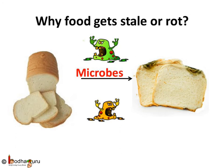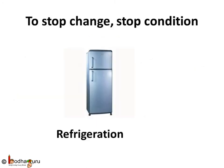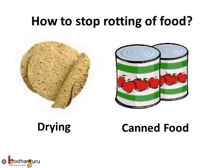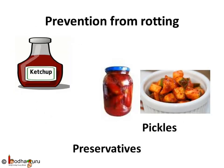Microbes grow when food gets moisture, oxygen, and warmth. If any of these are not there, the food will not rot or get stale. If we keep leftover food in the fridge, there is no warmth for microbes to grow. Or if we dry the food, there is no moisture. Food items are also canned so that there is no oxygen. Adding preservatives to food like salt, sugar, and oil — which are used in pickles — deters the growth of microbes and helps increase the shelf life of food items. Now you must know why pickles can be used for a long time.